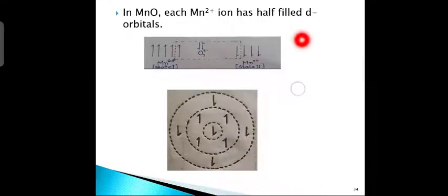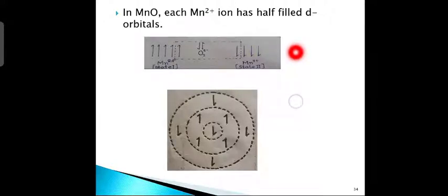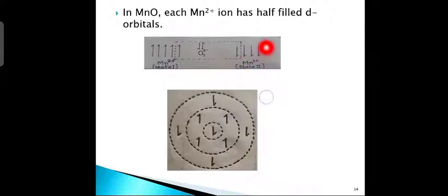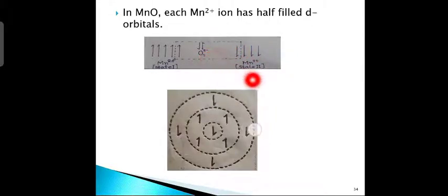In manganese oxide, each manganese ion has a half-filled d orbital. 3d⁵ means it has 5 half-filled orbitals — that means 5 electrons, so the 3d orbital is half-filled. Here you can see 5 electrons for manganese on one side; it should also be 5 on the other side. And then O²⁻, having 2 electrons.